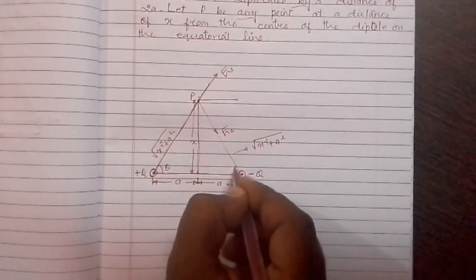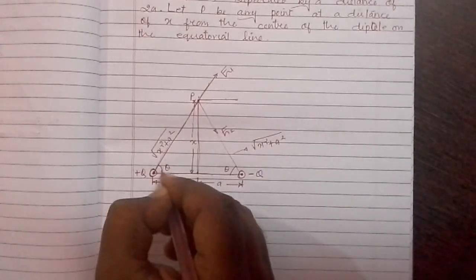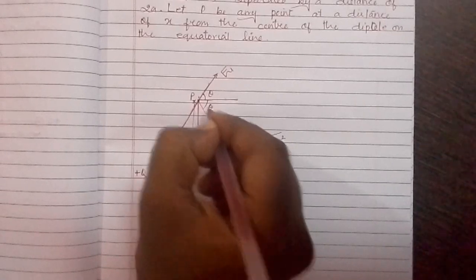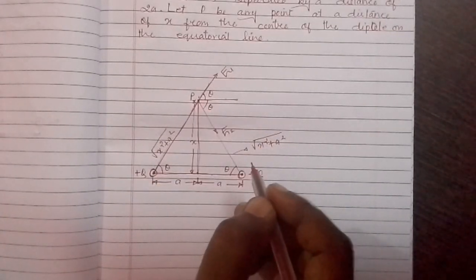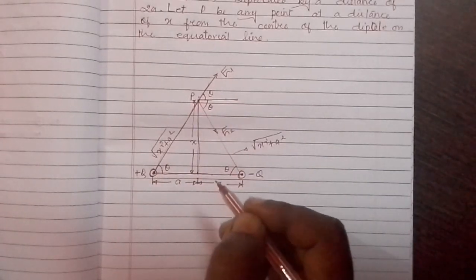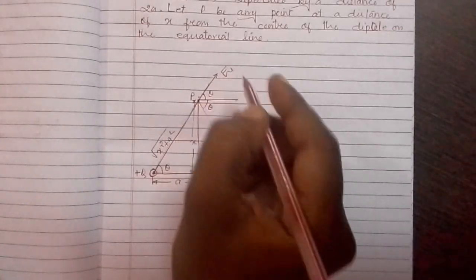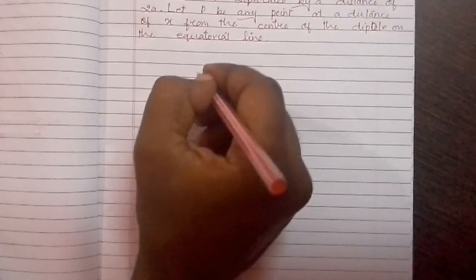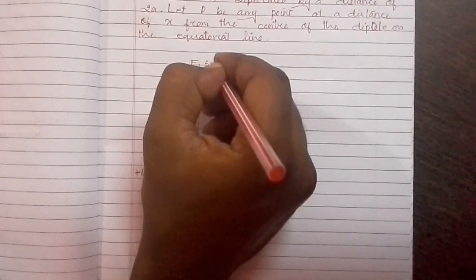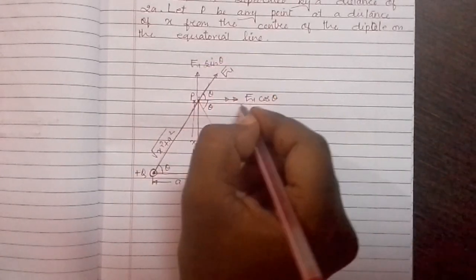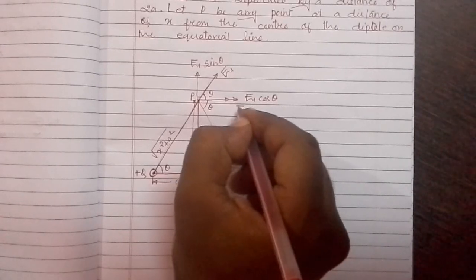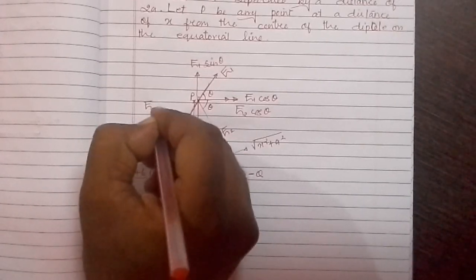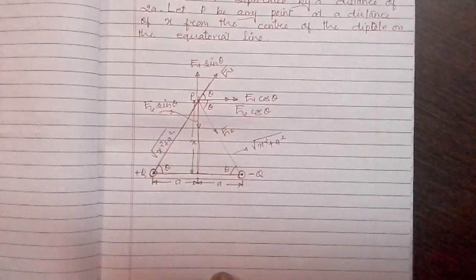Let this angle be theta. This angle is also theta since this line is parallel to the axial line — these are corresponding angles. This angle is also theta — these are alternate angles. Now we can resolve electric fields E1 and E2 into two components: along the equatorial line and along the axial line. So E1 has components E1 cos theta and E1 sin theta. Similarly for E2, we have E2 cos theta and E2 sin theta.